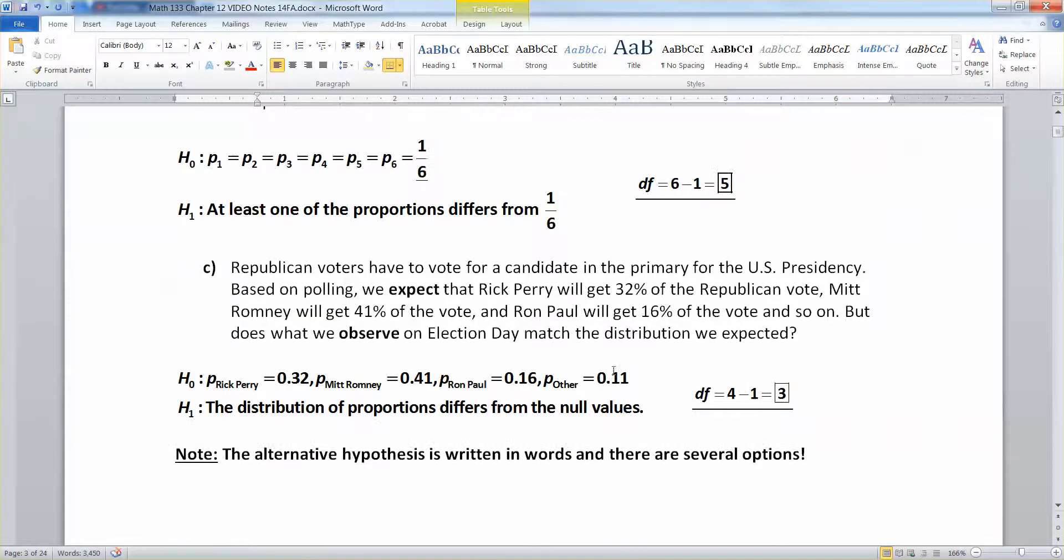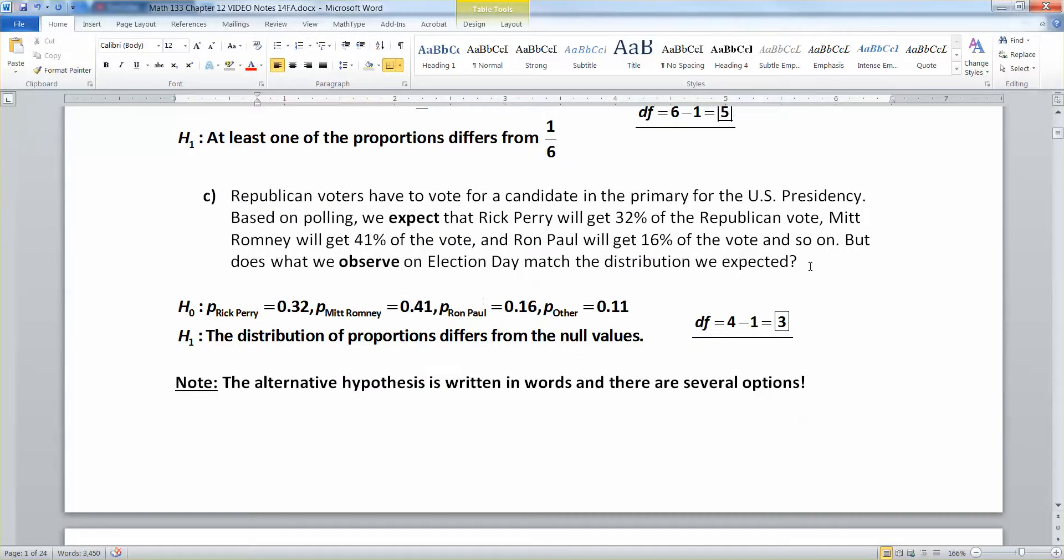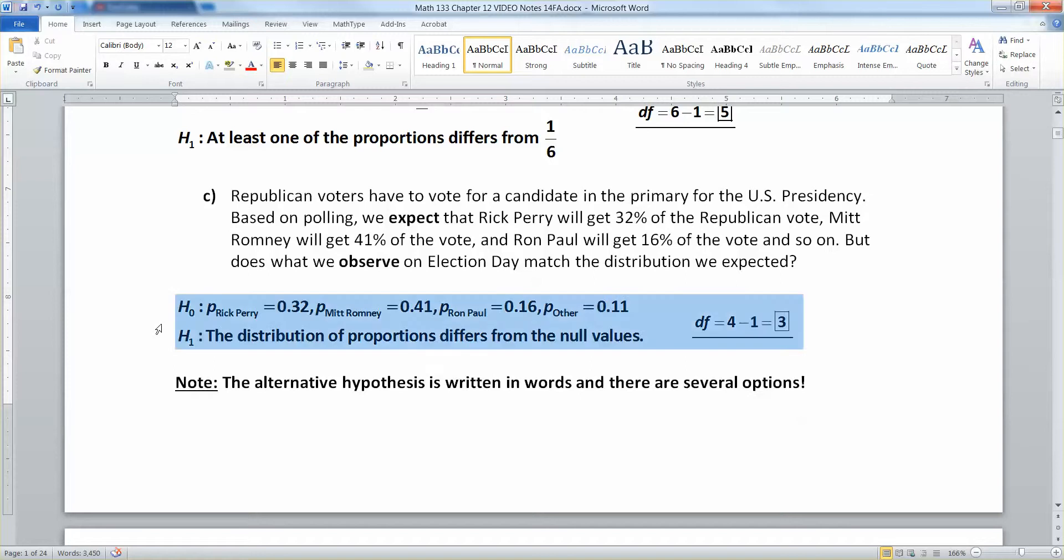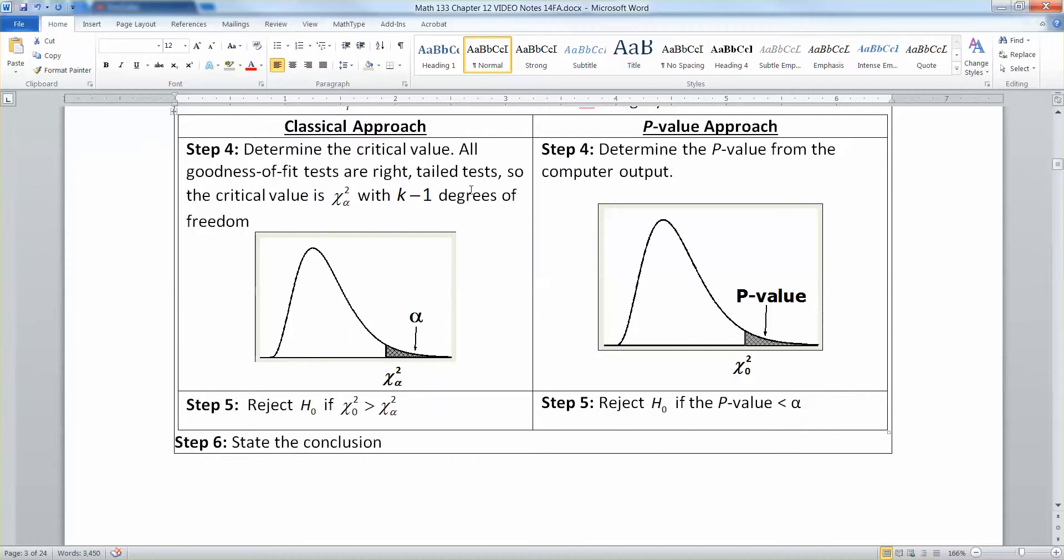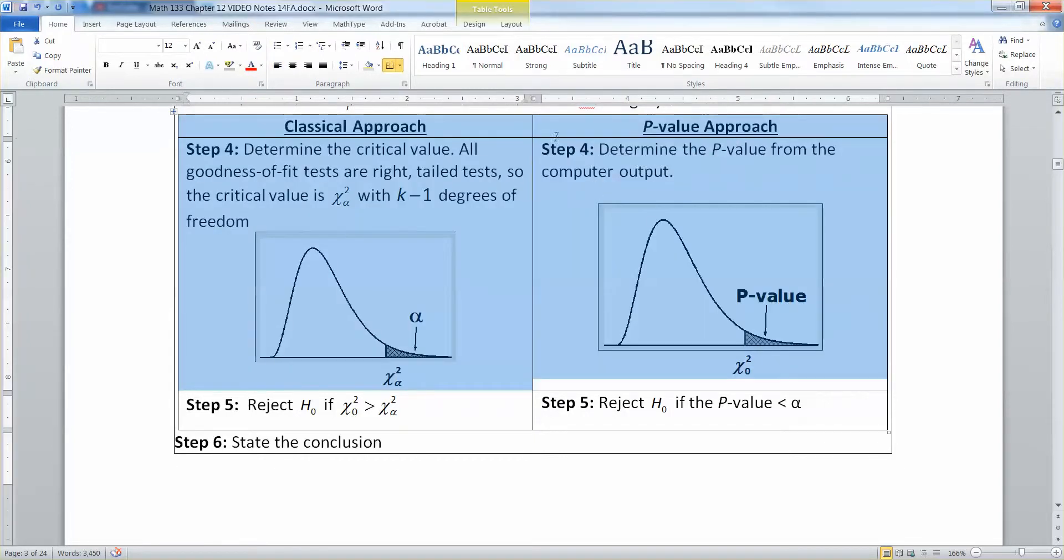If the requirements are not satisfied, one option is to combine some—that's where you get the 'other' category. If you remember the Ron Paul and Mitt Romney example, you can see what would have happened with the other candidates. They were so small that we just lumped them together into one group and made it 0.11. If you've got a bunch of small categories, lump them together, call them 'other,' and move on.